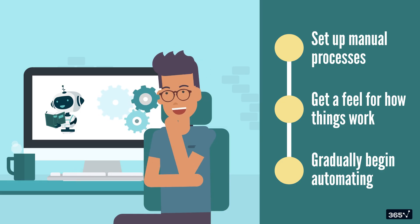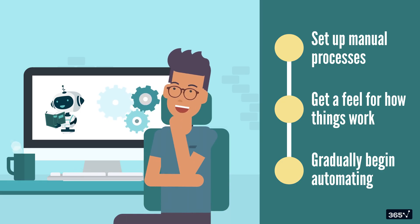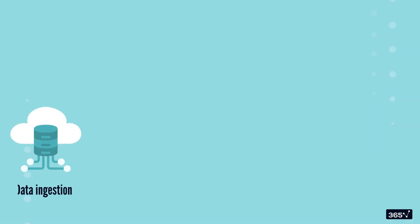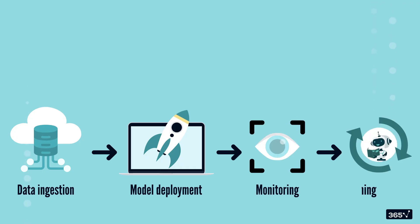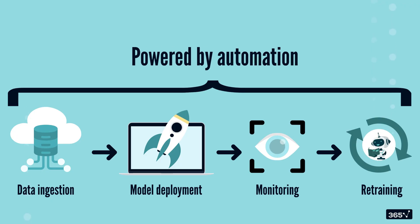Eventually, you'll reach a point where your entire pipeline runs smoothly without any human intervention. From the moment data is ingested to when the model is deployed, monitored, and retrained, it all happens seamlessly, powered by automation. That's the goal of fully automated ML Ops.